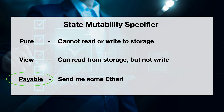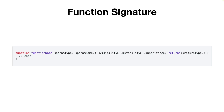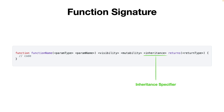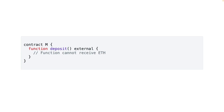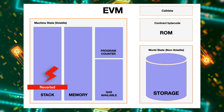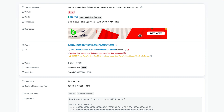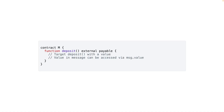We learned in the previous episode that a function's signature can have visibility specifiers, state mutability specifiers, inheritance specifiers, and so on. If you program one of your functions with the payable keyword, that function can receive ETH. Attempting to send ETH to a function not marked as payable will result in a reverted transaction — the EVM will revert and your transaction will fail.